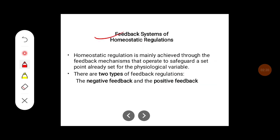Homeostatic regulation is mainly achieved through feedback mechanisms that operate to safeguard a set point already established for each physiological variable. There are two types of feedback regulation: negative feedback and positive feedback.